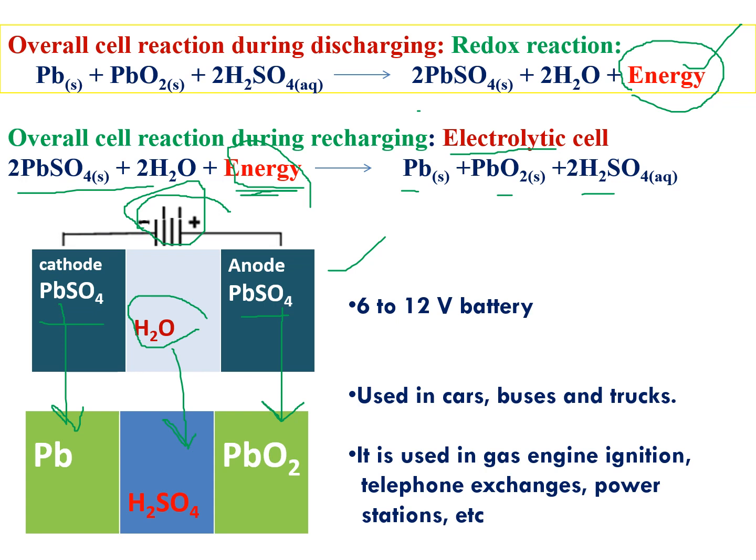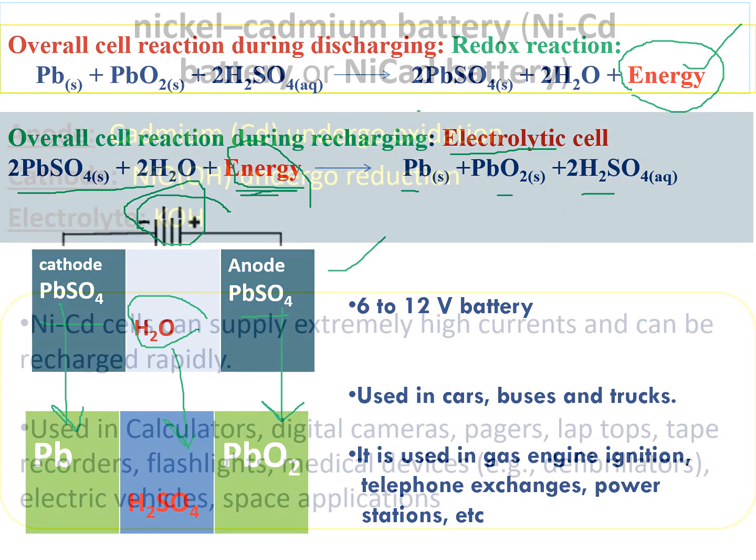Because of the large number of lead plates, the lead acid battery can produce 6 to 12 volts and stores a large amount of chemical energy — that's why it is called a storage battery. It is used in cars, buses, trucks, gas engine ignitions, telephone exchanges, and power stations. An important application is storing energy from non-conventional sources: for example, electricity generated by solar panels is first stored in these rechargeable batteries and then consumed whenever required.